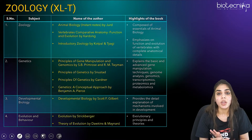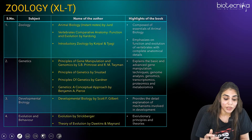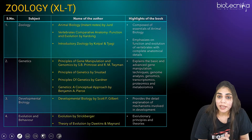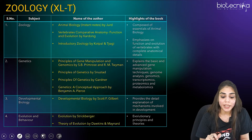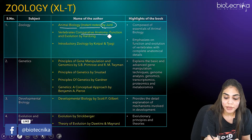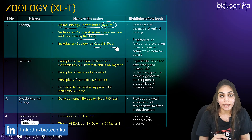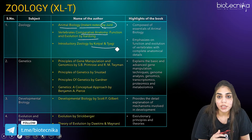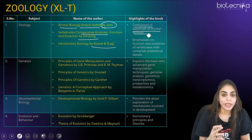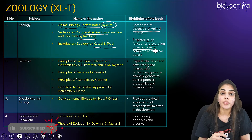Now coming to zoology, or the XL-T segment. In the zoology syllabus you have to study zoology, genetics, evolution, and developmental biology. For zoology, you can go for Animal Biology instant notes by Zerd, or Vertebrates Comparative Anatomy by Kardong — that is function and evolution — or Introductory Zoology by Kotpal and Tyagi. These books cover essentials of animal biology, emphasizing the functions and evolution of vertebrates along with complete anatomical details.